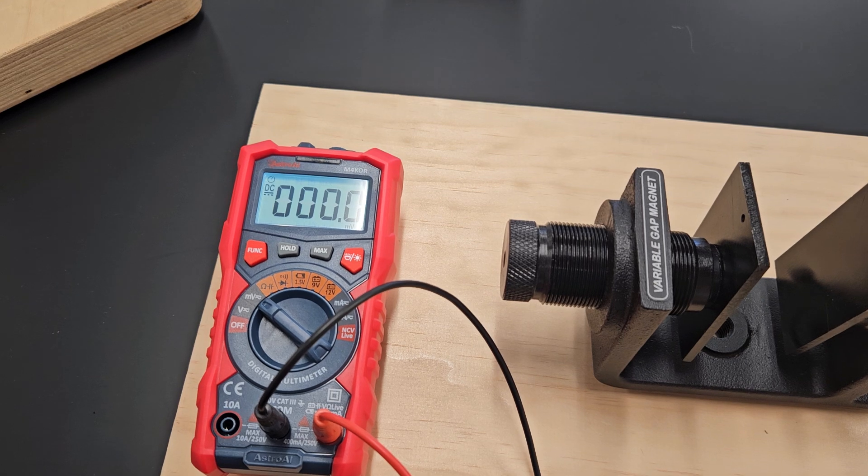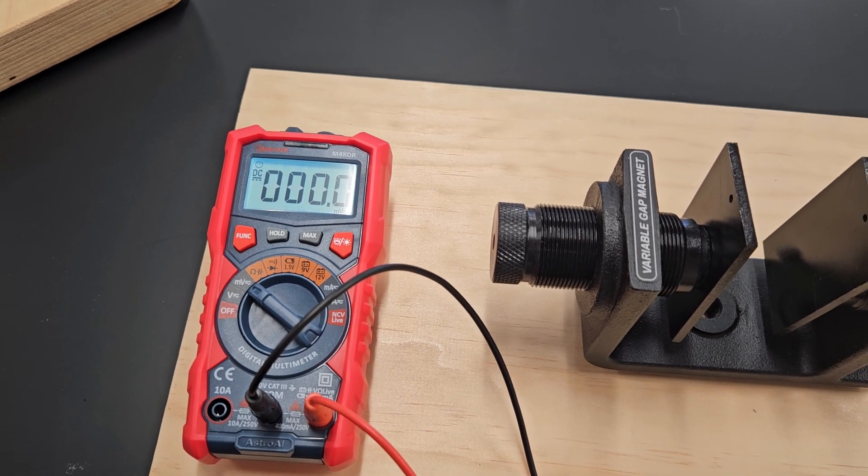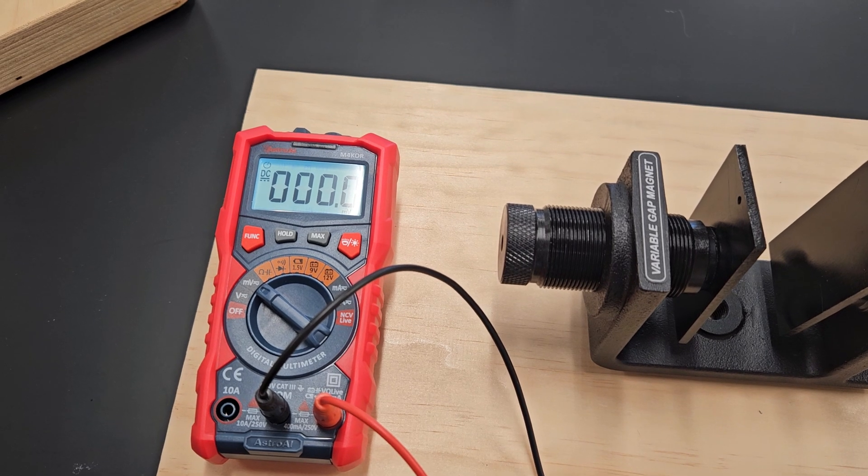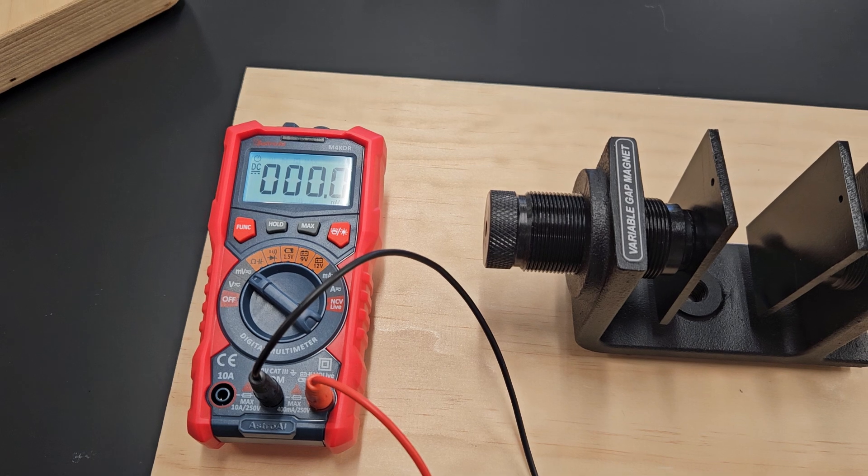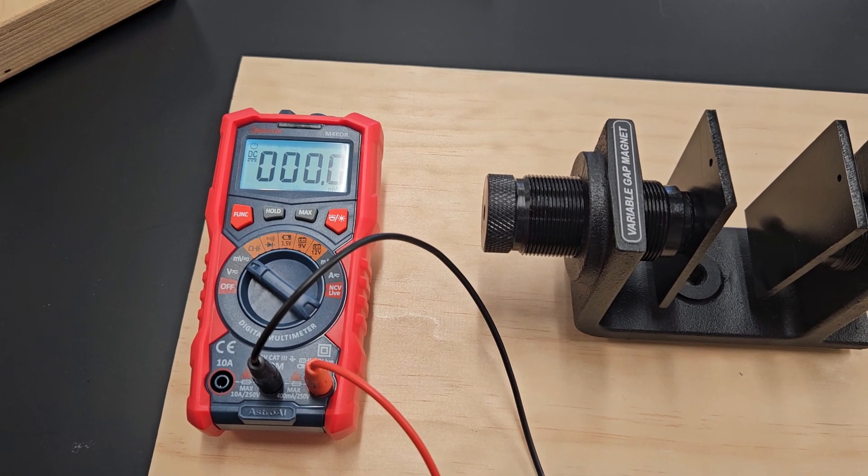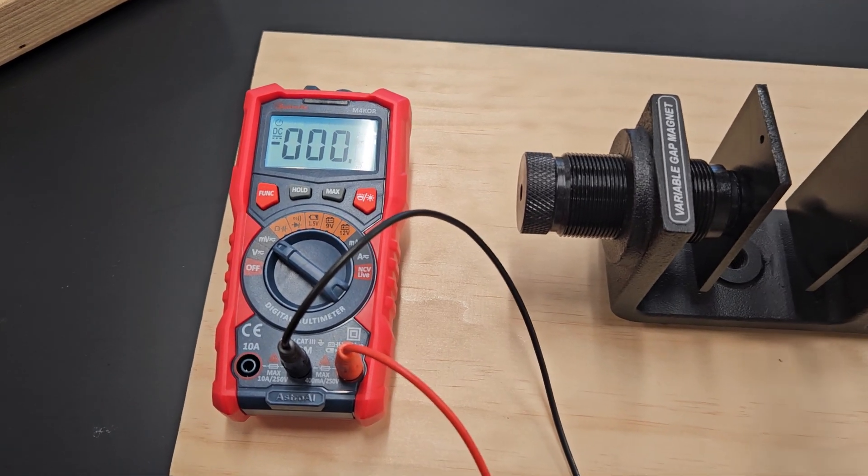So every time that I make the coil closer to the magnet and in motion, due to the variation of the magnetic field there will be an induced electromotive force.